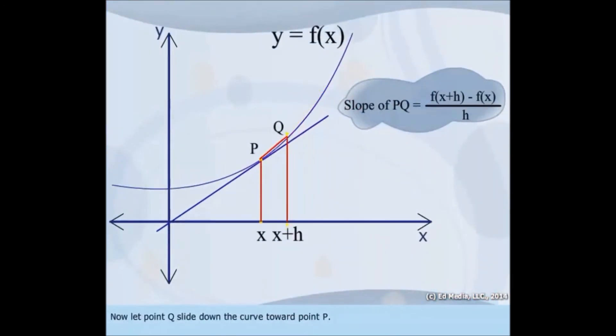Now, let point Q slide down the curve towards point P. In other words, let h approach zero.